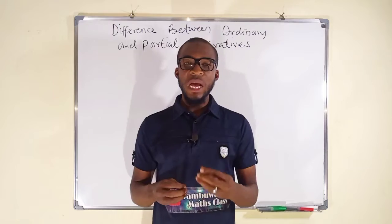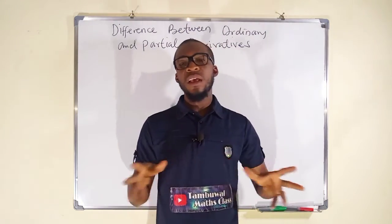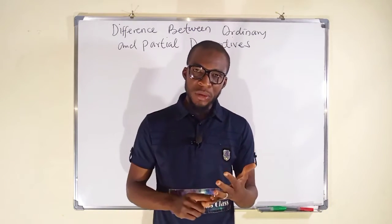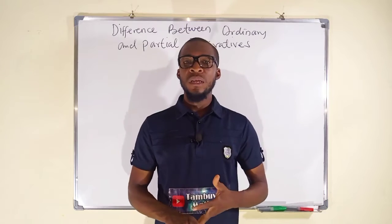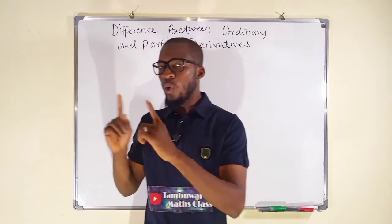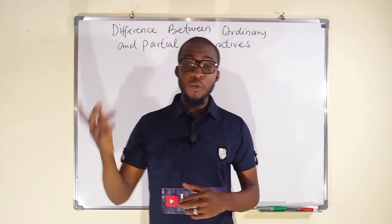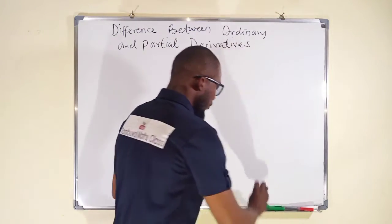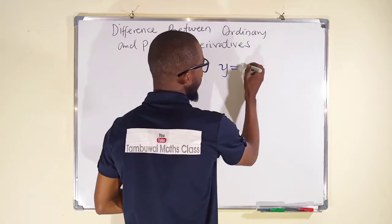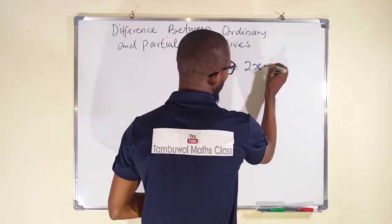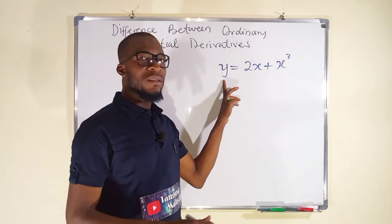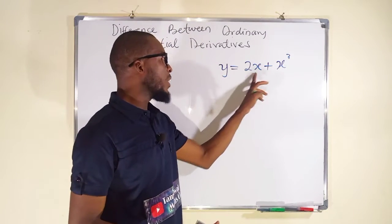In this tutorial, I will be using an algebraic equation as an example. An algebraic equation contains a dependent variable and an independent variable. Sometimes this dependent variable depends on only one variable — for example, y equals 2x plus x to the power of 3, where y as a dependent variable only depends on x.